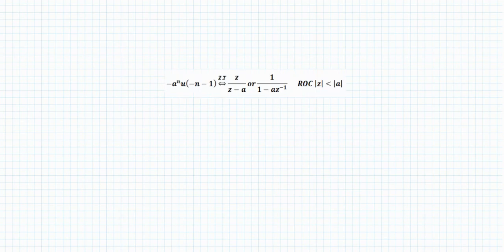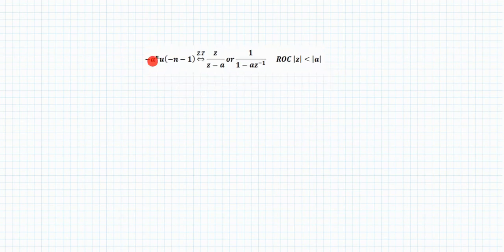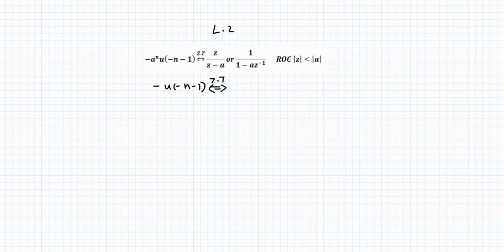Using the standard result discussed in Lecture 2: −a^n · U[−n − 1] ↔ Z/(Z − a), ROC |z| < |a|. With a = 1, the Z-transform is Z/(Z − 1) and ROC is |z| < 1. This is a quicker method if you know the standard result.